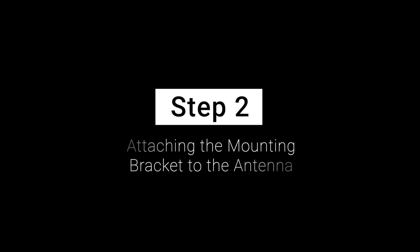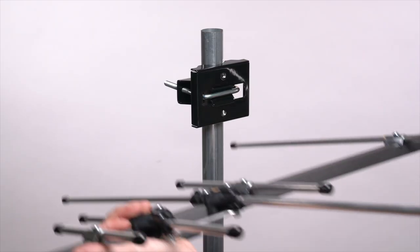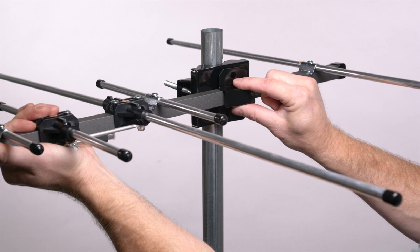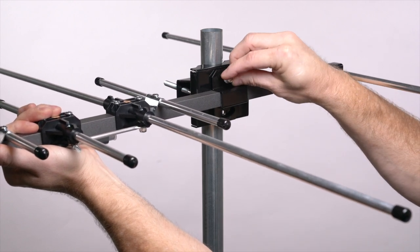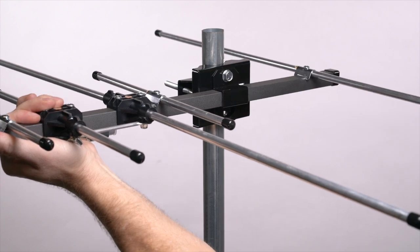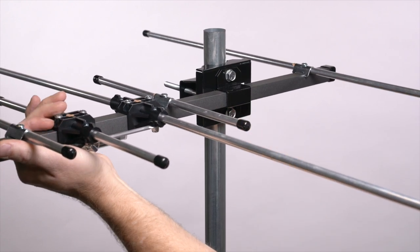Step 2: Attaching the Mounting Bracket to the Antenna. Place the boom clamp around the antenna boom, which is the center square tube of the antenna. Then, attach the boom clamp to the mounting bracket using the included half-inch bolts.